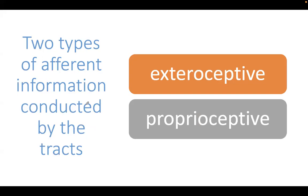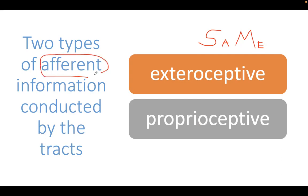There are two types of afferent information conducted by these tracts. Sensory is afferent; motor is efferent. Since we're talking about afferent information, we are talking about sensory modalities. There are two types: one is exteroceptive, and second is proprioceptive.